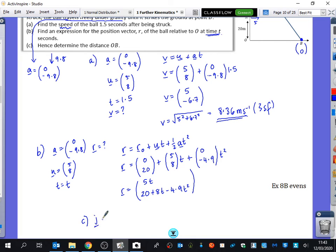So we know for part C that the J component equals 0. So we get 20 plus 8T minus 4.9T squared equals 0. And we can use our trusty quadratic equation solver. So you get that either T equals 2.9953 or T equals -1.362. But you can't have a negative. So the time is 2.9953.